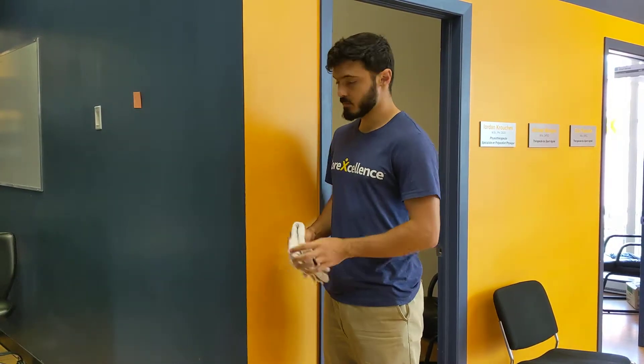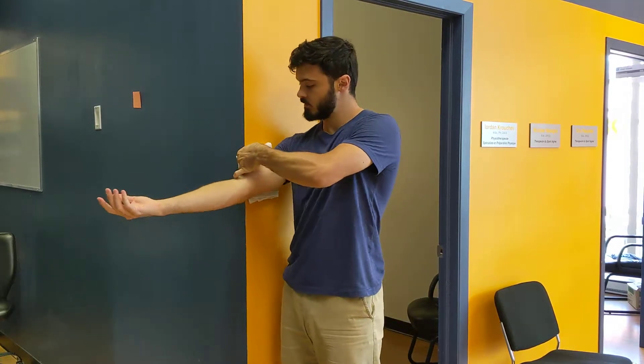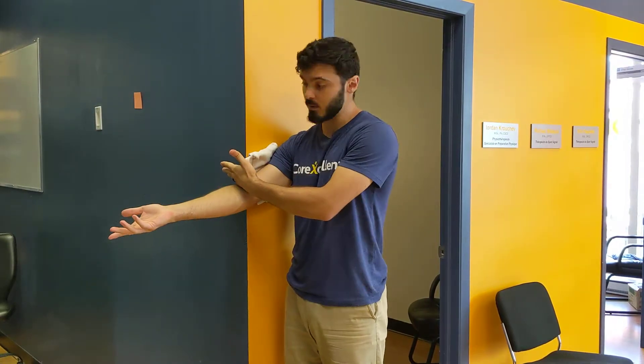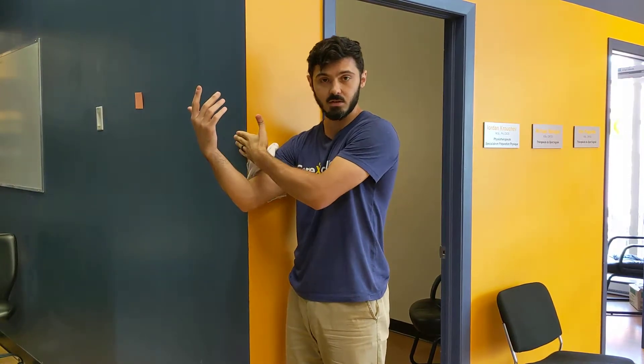We're going to take a small towel, place it against the wall, and place our arm in front of us with the bend of the elbow on the other side of the wall, so I can bend my elbow and it's past the corner.